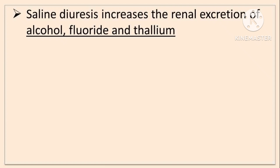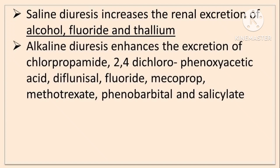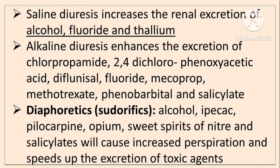Alkaline diuresis increases the excretion of chlorpropamide, 2,4-dichlorophenoxyacetic acid, diflunisal, fluoride, maprotiline, methotrexate, phenobarbital and salicylate. Diaphoretics are agents which increase sweating or perspiration and remove toxins. Alcohol, ipecac, pilocarpine, opium, sweet spirits of nitre and salicylate cause increased perspiration and speed up the excretion of toxic agents — they are diaphoretic agents.